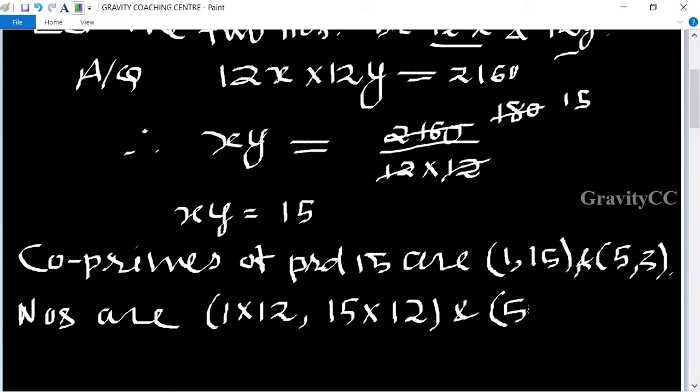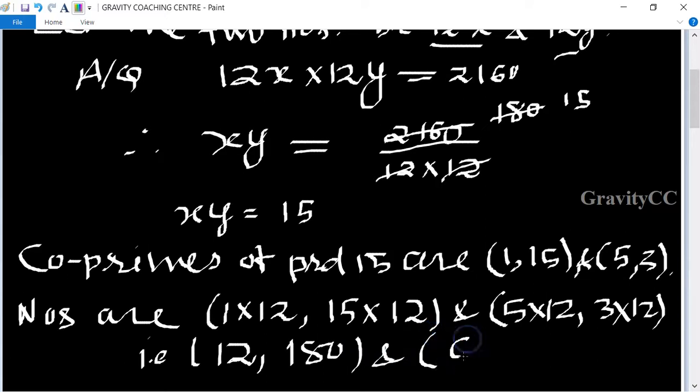5 into 12 comma 3 into 12. So that is 12 comma 180, and the other pair is 60 comma 36.